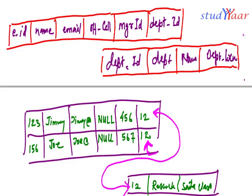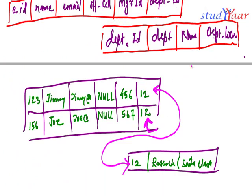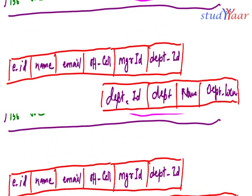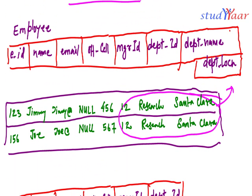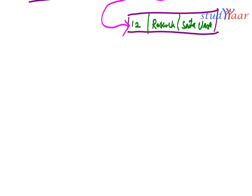That was about redundant data. This schema — with two tables — is better because it does not involve redundancy. The original single schema is bad because it has redundancy in terms of department details.